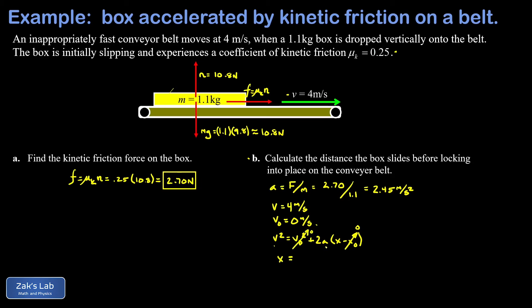Dividing both sides by 2a, we get x = v²/2a. That's 4² divided by 2(2.45), giving us a total sliding distance of 3.27 meters.